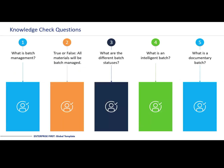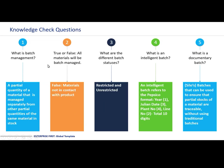We're just going to go through some knowledge check questions. What is batch management? True or false: all materials will be batch managed. What are the different batch statuses? What is an intelligent batch? And what is a documentary batch? Looking at question one: batch management is a partial quantity of a material that is managed separately from other partial quantities of the same material in stock. True or false — all materials will be batch managed: we know this to be false. Materials not in contact with product will not necessarily be batch managed.